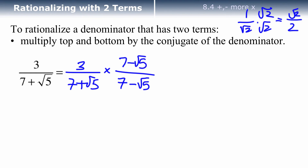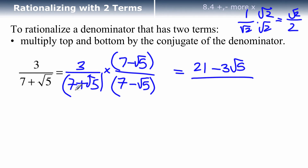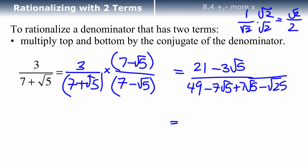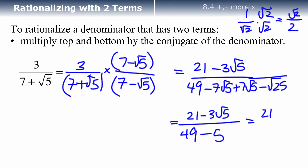So let me rewrite what I've got: 7 plus root 5. I'm going to multiply both top and bottom by the conjugate, which is 7 minus root 5 — it's the exact same thing except you change the sign. On the top, 3 times 7 would be 21, and 3 times negative root 5 would be negative 3 root 5. On the bottom, FOIL gives: 7 times 7 is 49, 7 times negative root 5 is negative 7 root 5, root 5 times 7 is positive 7 root 5 — those cancel — and root 5 times negative root 5 is negative root 25 which is negative 5. So the answer is 21 minus 3 root 5 all over 49 minus 5, which is 44.